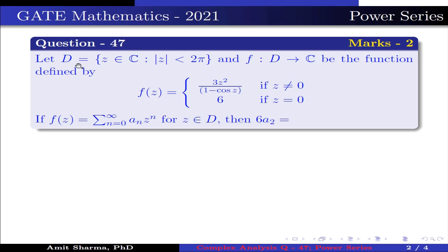Question is: Let D = {z ∈ C: |z| < 2π} and f: D → C be the function defined by f(z) = 3z²/(1 - cos z) if z ≠ 0, and f(z) = 6 if z = 0.